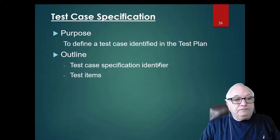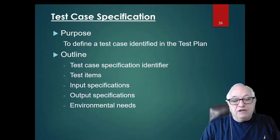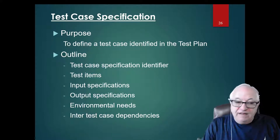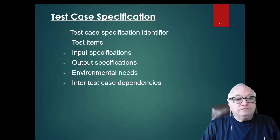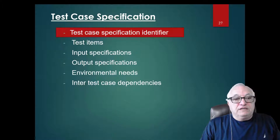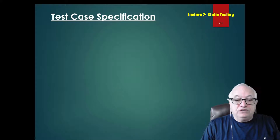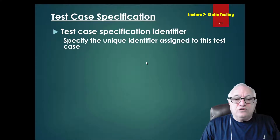The outline of the test case will have the identifier, the test items being tested, the input specification, all inputs you're going to provide and expected outputs, any hardware or environmental needs, and any inter-case dependency. The test case specification identifier is a unique identifier assigned to this test case, meaning it is under configuration control.